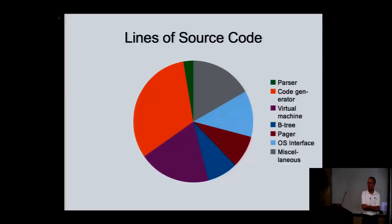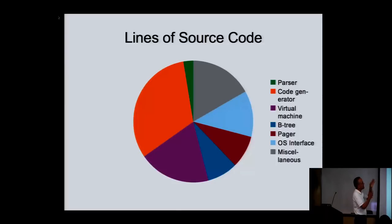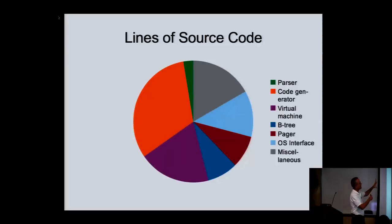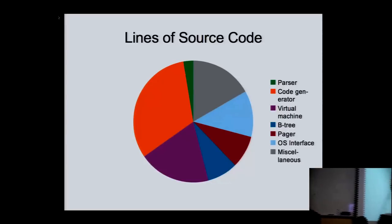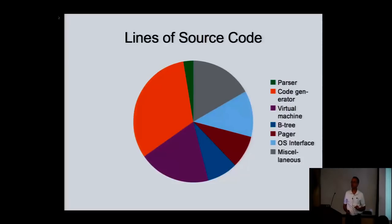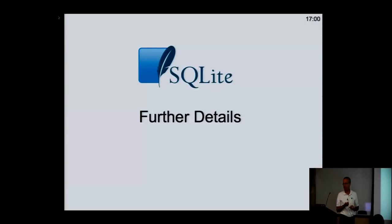There was a question about what percentage of the code deals with the SQL part. Here's the chart — source code percentages. The parser is a little green slice. The code generator is the bulk of it. The code generator, virtual machine, and parser together are over half of it. The B-tree layer is just a thin little slice — really not that much.